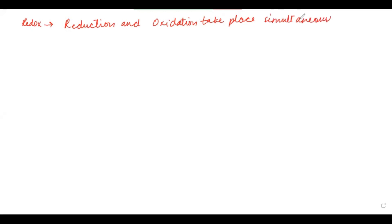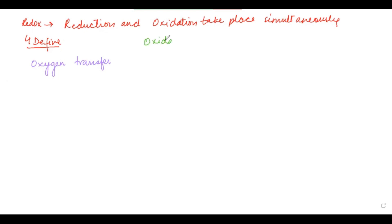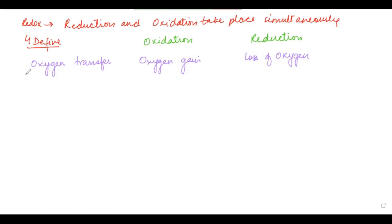We have four ways to define redox — reduction and oxidation. We will be doing one definition at a time. In terms of oxygen transfer: oxidation is basically where there is a gain of oxygen, and where there is a loss of oxygen, we call that reduction.